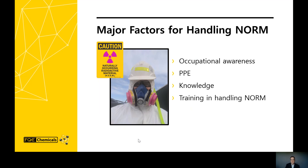Occupational awareness and knowing how to decontaminate and handle NORM safely — so as not to spread or contaminate other workers — is a subject of concern. The proper PPE necessary, as shown here, includes a respirator, a Tyvek suit, gloves, boots, and taped-off cuffs. You can see that in this PPE you wouldn't last long in the summer months, especially here in Texas. All workers would have to have proper knowledge and training in NORM.